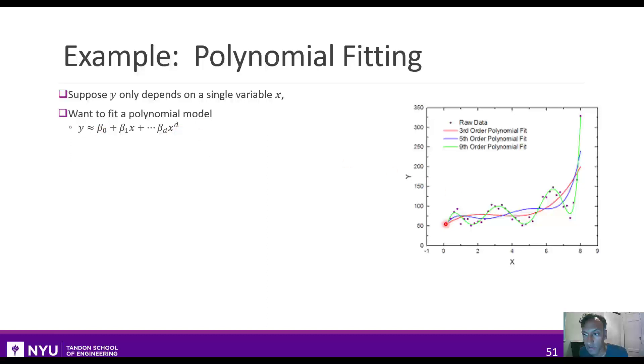So for example, if we took the third, fifth, or ninth order, we can see that kind of possible fit here, with getting increasingly more complex types of relationships as we increase the order. We'll talk about how to select the order d in the next unit. But imagine for now, that it's just given.